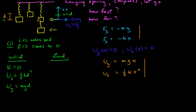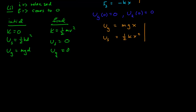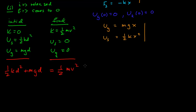At the final point it comes back to equilibrium, so it has kinetic energy ½mv², but we've defined both potential energies to be zero at that point. Conservation of energy gives us: ½kd² + mgd = ½mv². Solving for velocity, v = √(k/m · d² + 2gd). If we know d, k, and m, we can calculate the velocity.